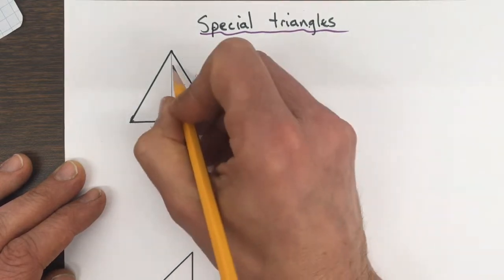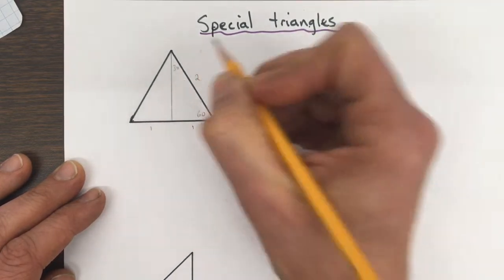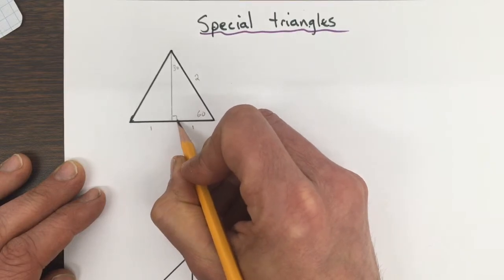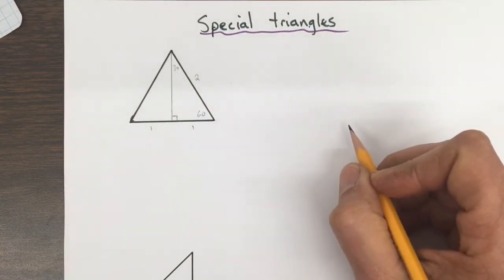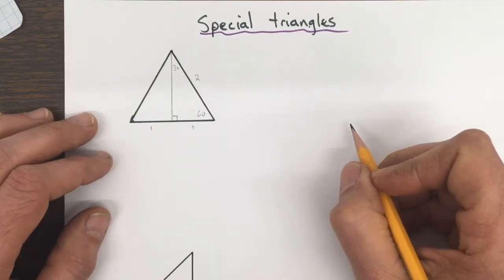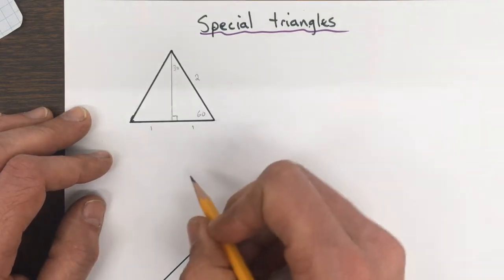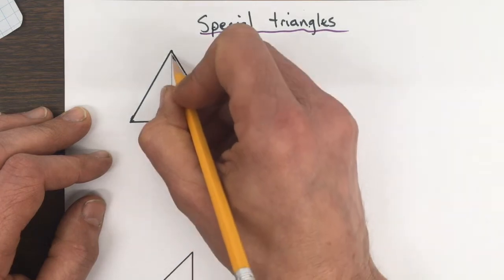It also makes this angle 30 and we have a 90 there. So when we look at our trig ratios, the first thing we have to do is figure out the height of this.